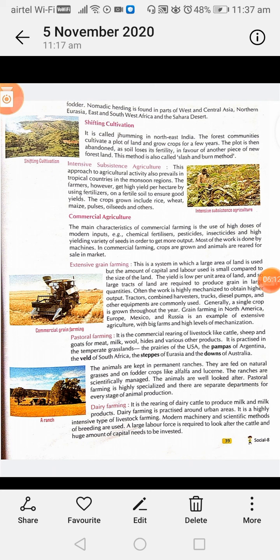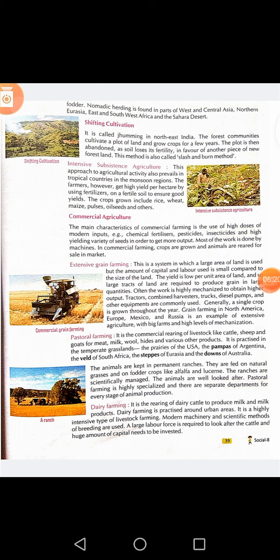Extensive grain farming is a system in which a large area of land is used, but the amount of capital and labor used is small compared to the size of land. The yield is low per unit area, and so large tracts of land are required to produce grain in large quantity. The work is highly mechanized to obtain higher output.